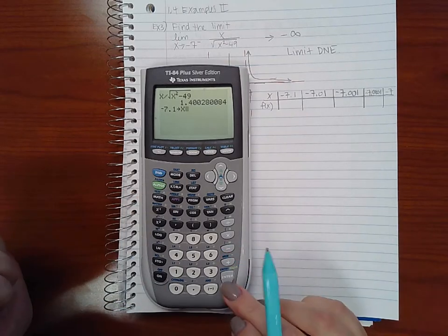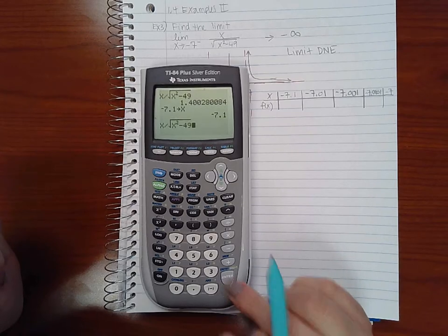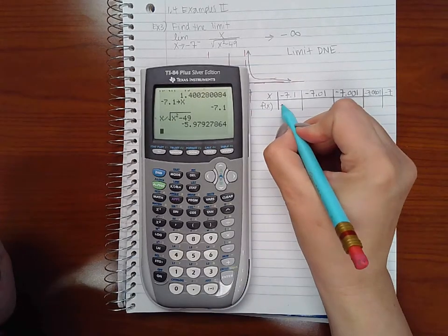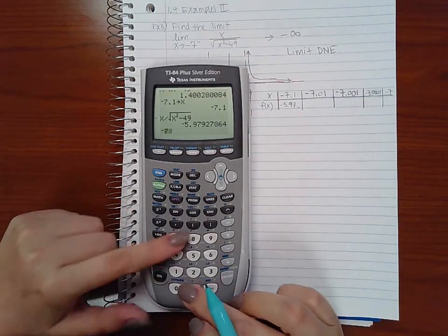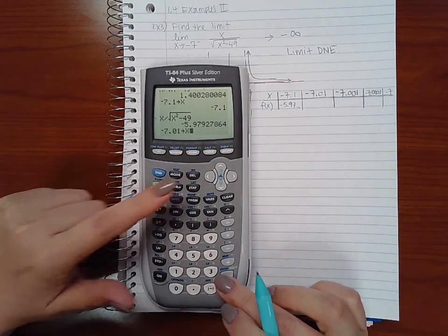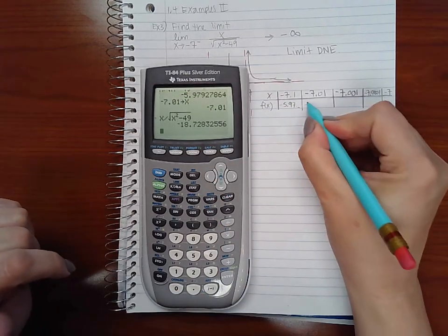Now what I'm going to do is negative 7.1 and I'm going to hit this button here that says STO store, and I'm going to hit my x button, hit enter. Then I'm going to go back up to my expression and hit enter again and it's going to plug it in. Then I'm going to do negative 7.01, store x, go back up, hit enter and it plugs it in.